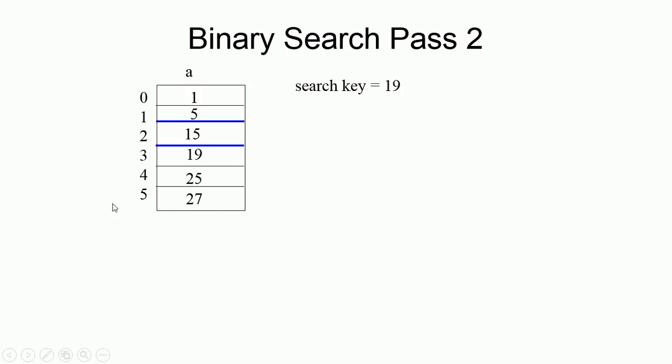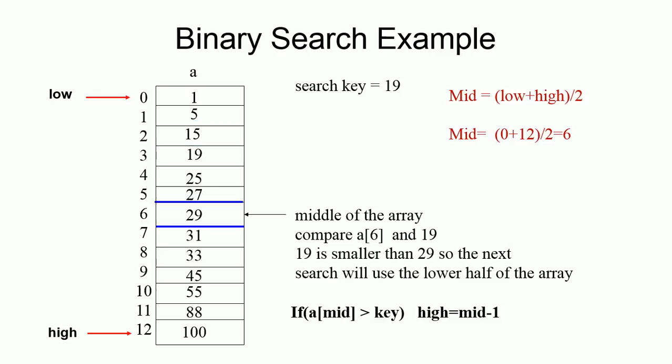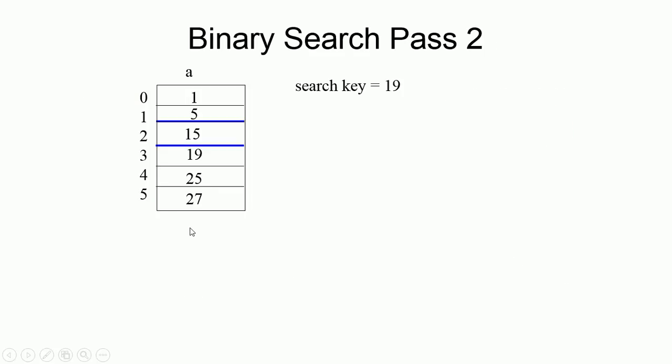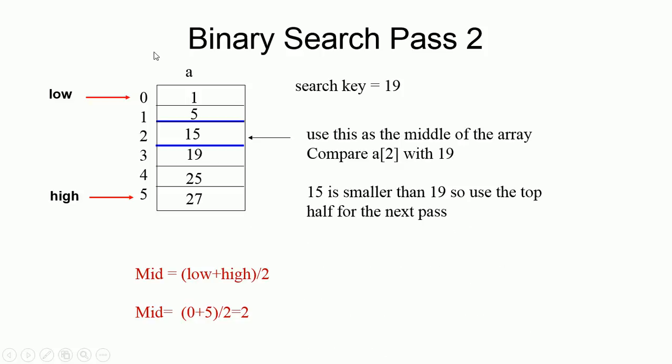Once again, we have to repeat. Same thing. So, once again, we have low. Then, once again, we have high. Find mid. What is the value of mid here? 2. What is the value here? Mid. This is mid. What is the value of mid here? 15.